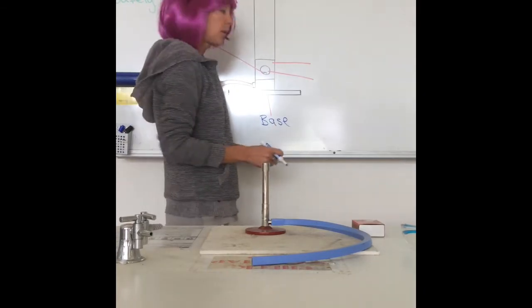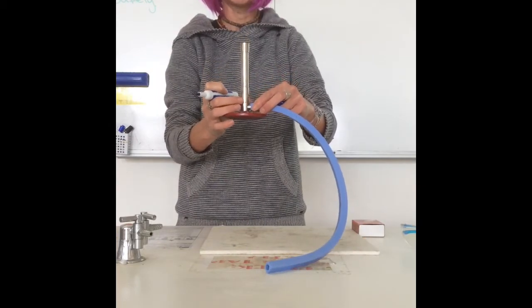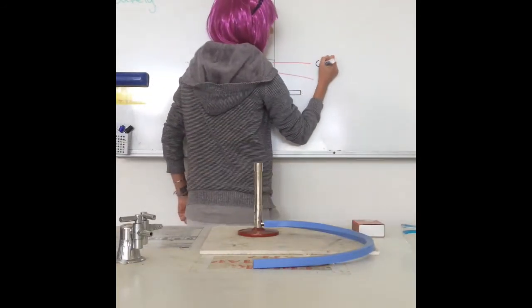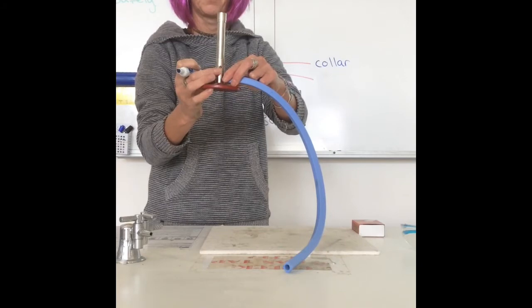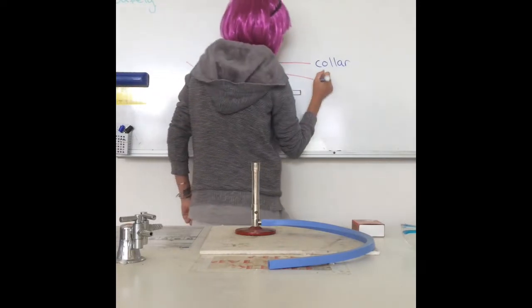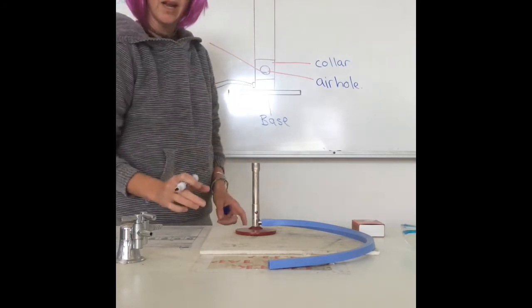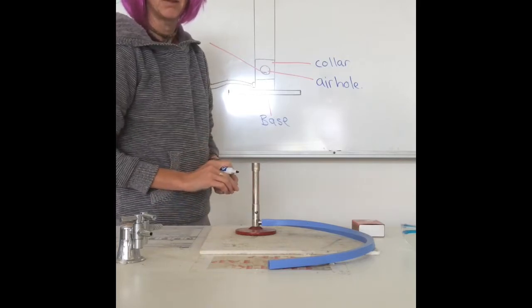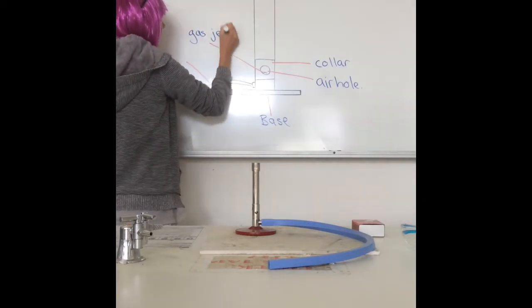If we move up, we're going to look at this bit. This is the part that you turn around to get the different colour flames. That's called the collar. And then within the collar, you end up with this hole to let more oxygen in. That is the air hole. And if you look through that air hole, you will find what lets the gas into the Bunsen burner. That's called the gas jet.